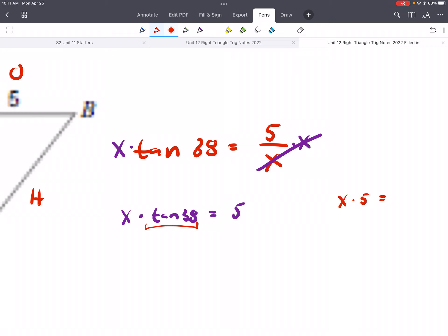If it was something like that, what would we do? Well, it's being multiplied, so we would divide both sides by 5. Yeah, so it's the same sort of thing. It's being, X is being multiplied by tangent of 38, so we will divide both sides by tangent of 38. So we'll cancel, and now we just have X equals 5 divided by tangent of 38.